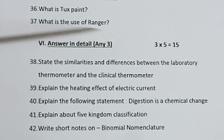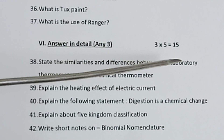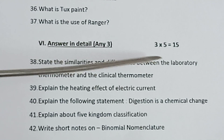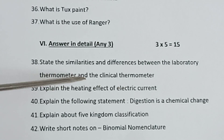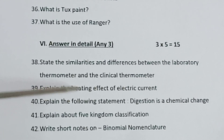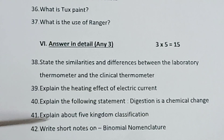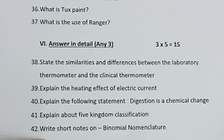Roman numeral six: Each question carries five marks. Answer in detail — answer any three. 3 into 5 is equal to 15. Thirty-eight: State the similarities and differences between the laboratory thermometer and the clinical thermometer. Thirty-nine: Explain the heating effect of electric current. Forty: Explain the statement — Digestion is a chemical change. Forty-one: Explain about five kingdom classification. Forty-two: Write short notes on binomial nomenclature. All the best.